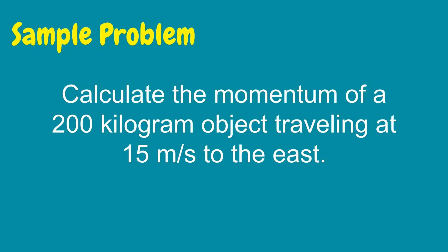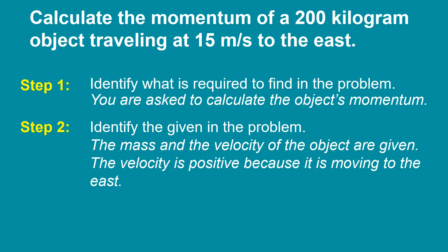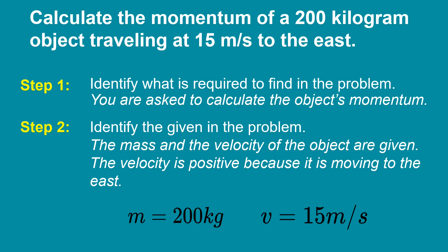Calculate the momentum of a 200-kilogram object traveling at 15 meters per second to the east. To answer the sample problem, let's follow the following steps. First, identify what is required to find in the problem — you are asked to calculate the object's momentum. Second, identify the given in the problem. The mass and the velocity of the object are given. The velocity is positive because it is moving to the east. Therefore, mass is equal to 200 kilograms, while velocity is equal to 15 meters per second.